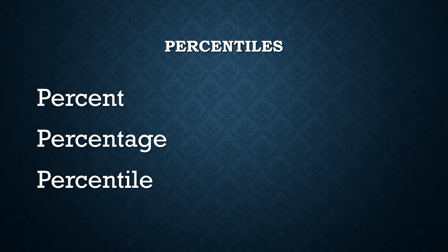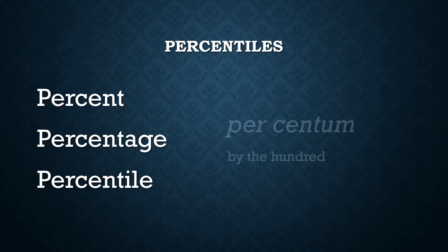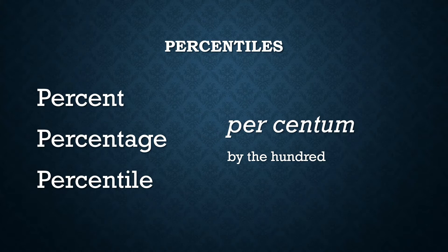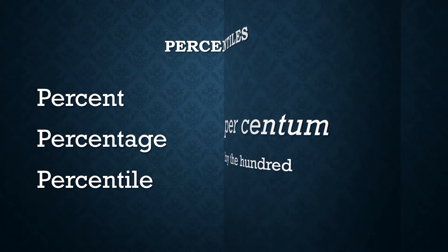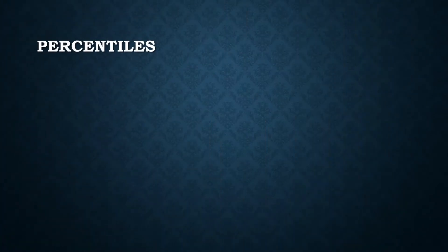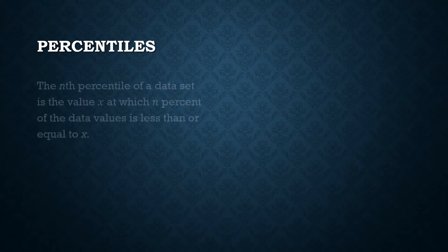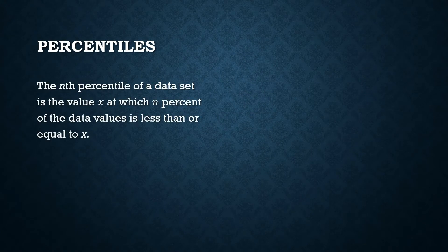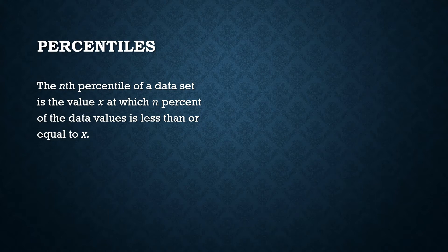These words have the same etymology, but they are not synonymous. They do not mean the same thing, but they are somewhat related to each other. It came from the Latin word percentum, by the hundred. So what is a percentile? The nth percentile of a data set is the value x at which n percent of the data values is less than or equal to x.